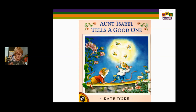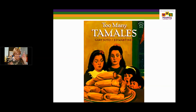Aunt Isabel Tells a Good One is a model for the use of our magnets. There are embedded episodes, each one a complete episode — it's a story within a story. Too Many Tamales is a picture book with settings of the kitchen, a bedroom, and a living room. In each of those rooms there are kickoffs that happen and build complexity of the text — it's almost like a chapter book in picture book form. Each one is a complete episode, but they are embedded within each other. It's also a cultural book.